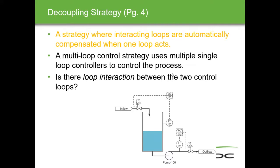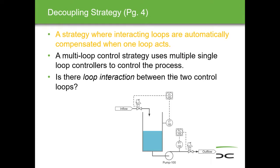When we have two separate loops and try to work with them, the object here is multi-variable — multiple different loops. In order to prevent the interaction of one loop with the other and vice versa, we have to come up with a decoupling strategy. A decoupling strategy is one where interacting loops are automatically compensated when one acts — just like in ratio control where a change in one multiplied the controller output by a certain value and applied it to the other controller.